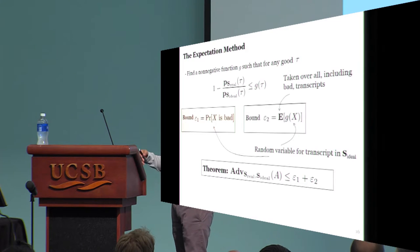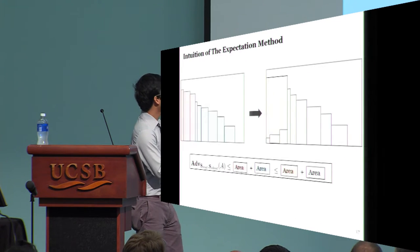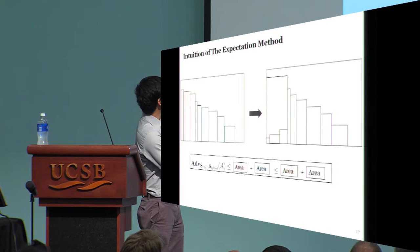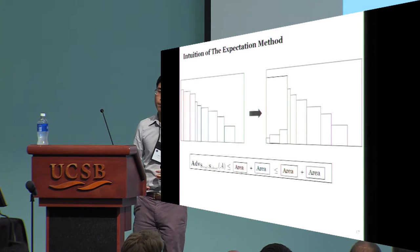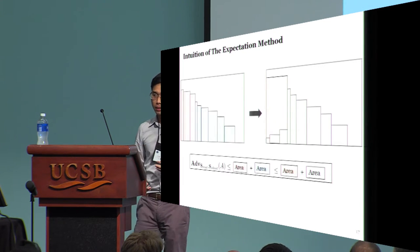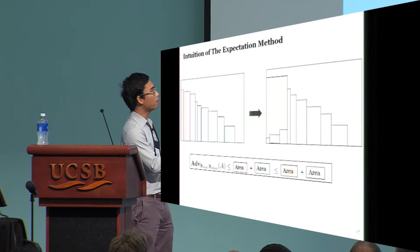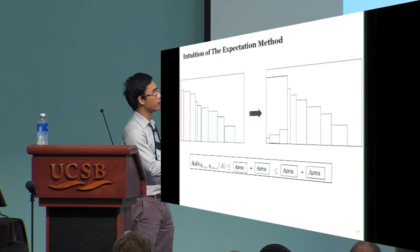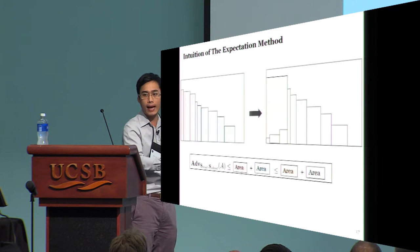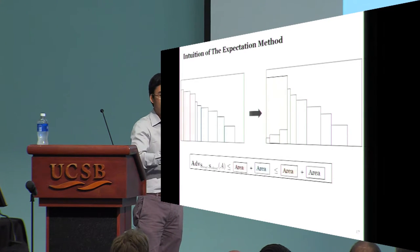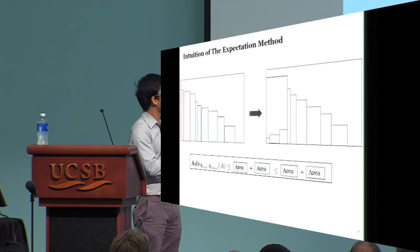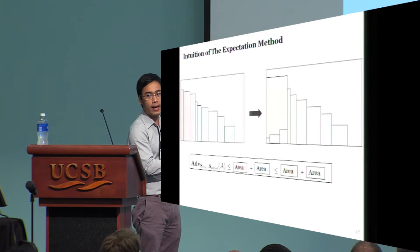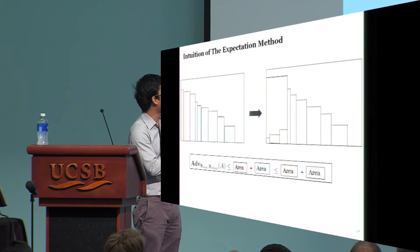To understand some intuition why that is true, recall that the H-coefficient technique wants to bound this blue area by a big rectangle. And that can be a waste in some cases. So, now instead, we'll use some custom-made shape to approximate that. And if you use a good bound, then you can essentially have a very tight estimation of the blue area here.